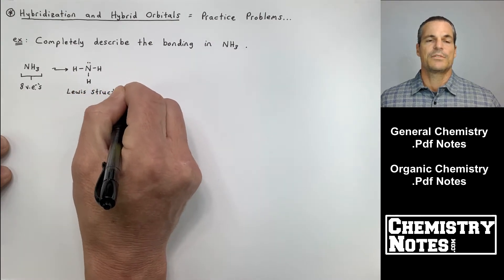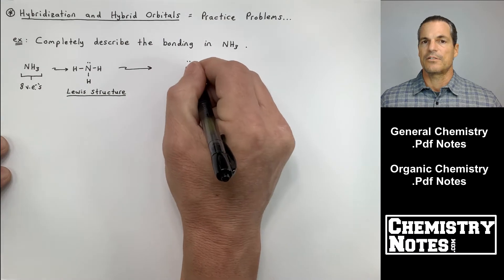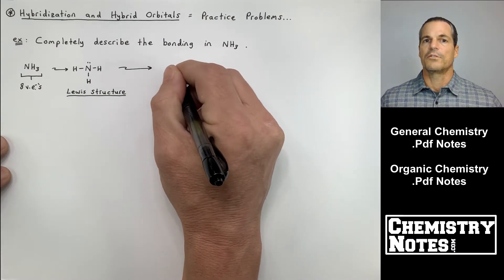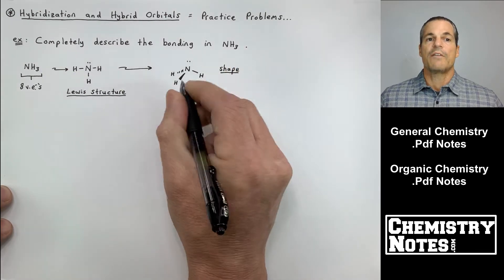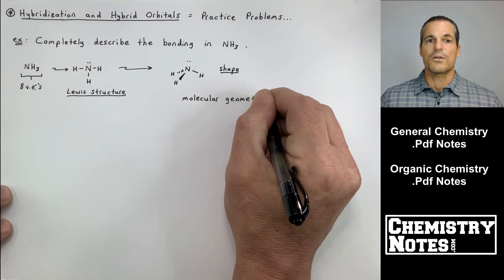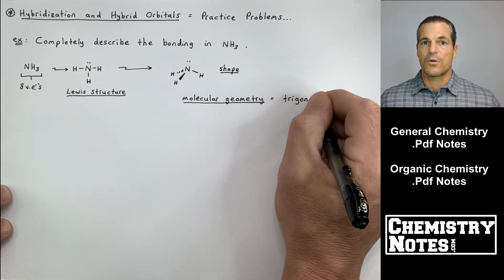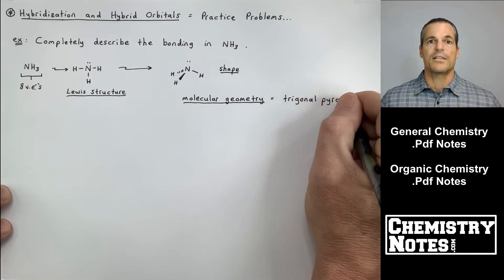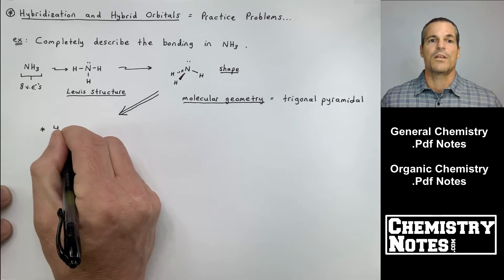So the first example says completely describe the bonding in NH3. Again, this is all referring to the localized electron model hybridization. I've quickly taken NH3 and drawn its Lewis structure, its shape and its molecular geometry. Now I'm not saying that's a quick thing to do. There is a process and there's five rules for drawing Lewis structures, but we've already gone over that. That's not the topic of this video.